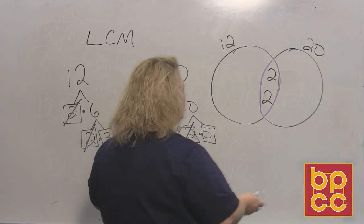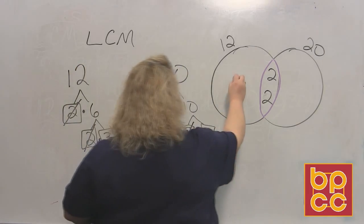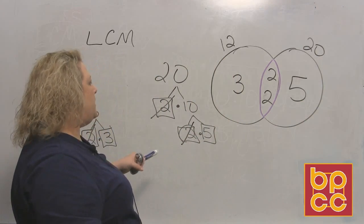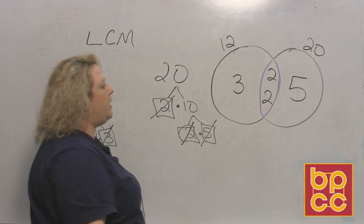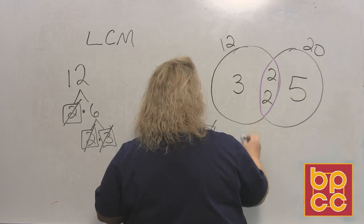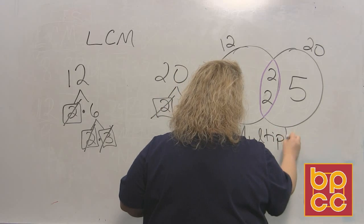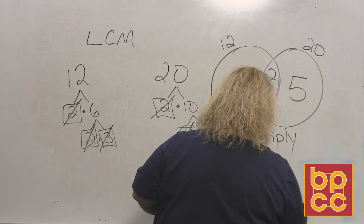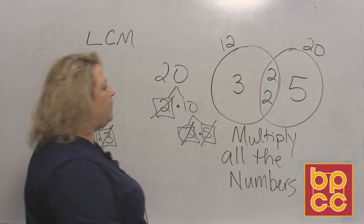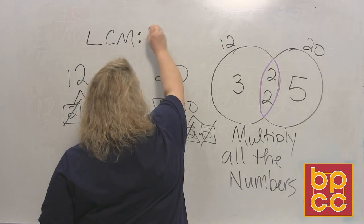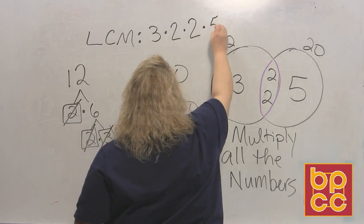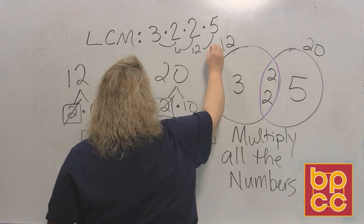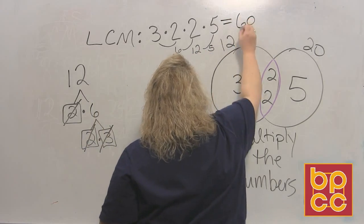Now once you've done that, you still have other numbers that you have to deal with. For 12, I still have a 3, so you write it down on the outside of the intersection. And 20 has the digit 5. Those are all of the numbers that I need to deal with because I've used everything. That's why I like to cross it out. Once you are done and you've got to this point, all you do is multiply all these numbers. Once you multiply all of the numbers together, that will be your least common multiple. So that would be 3 times 2 times 2 times 5. 3 times 2 is 6, 6 times 2 is 12, and 12 times 5 is 60. So the least common multiple between 12 and 20 is 60.